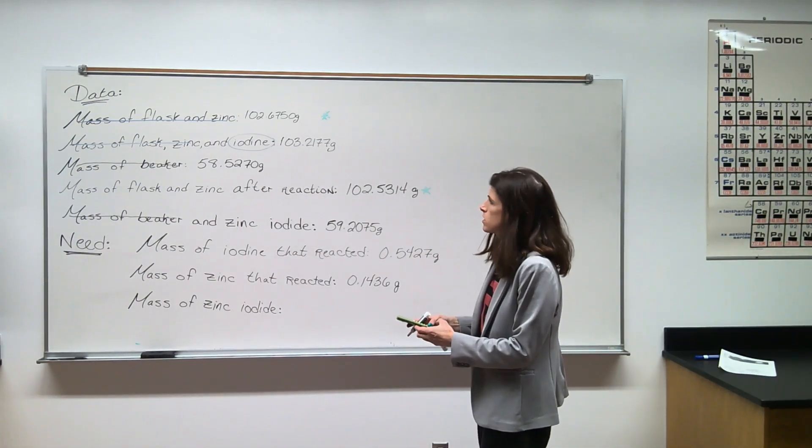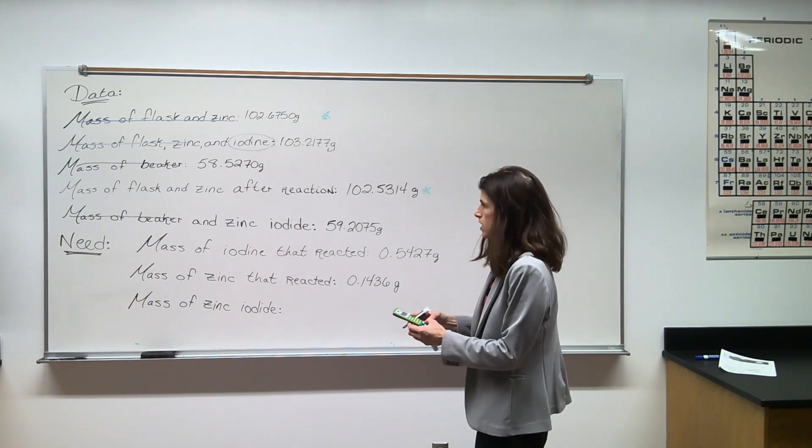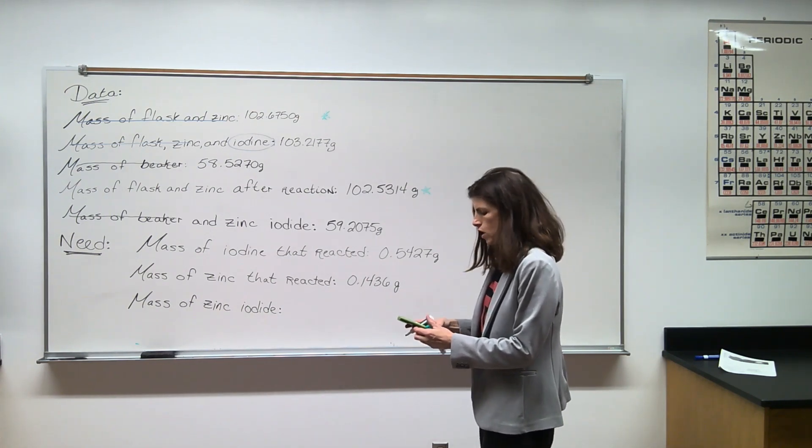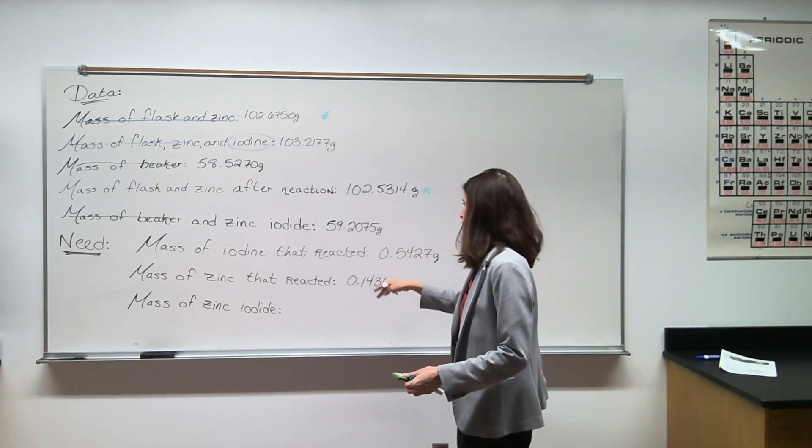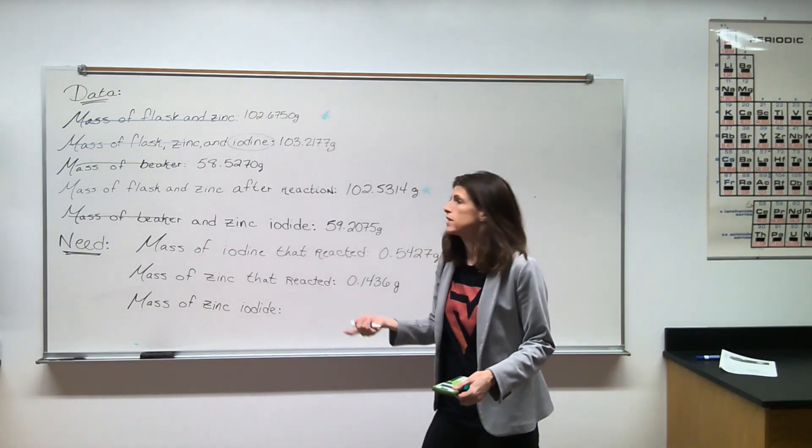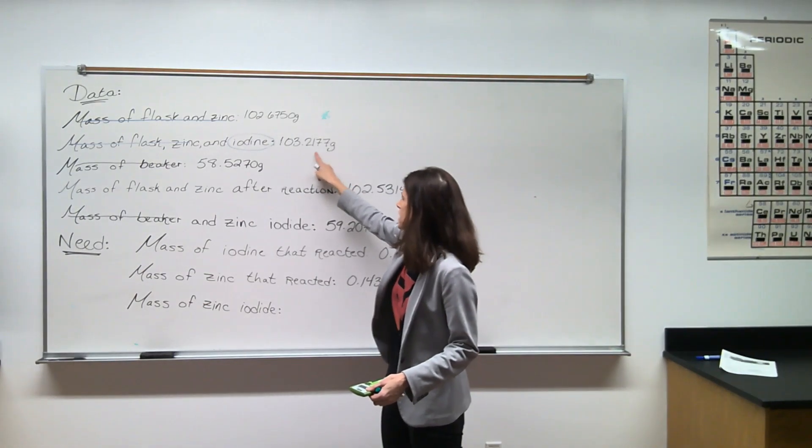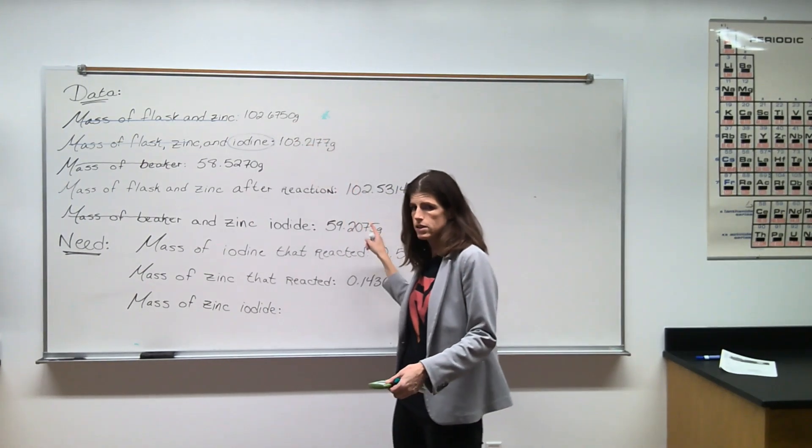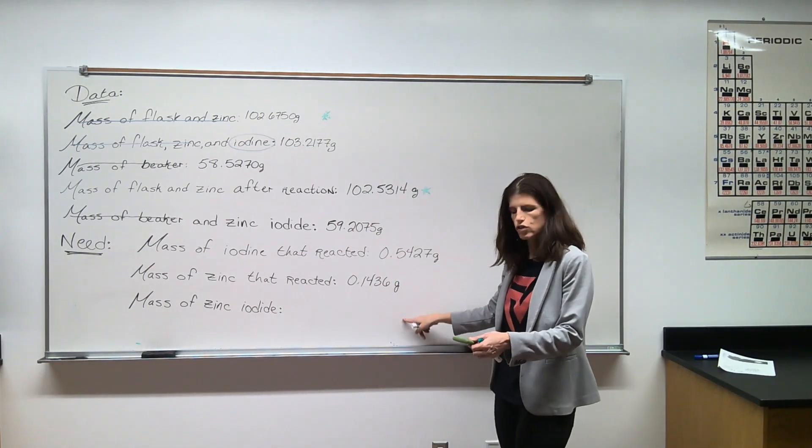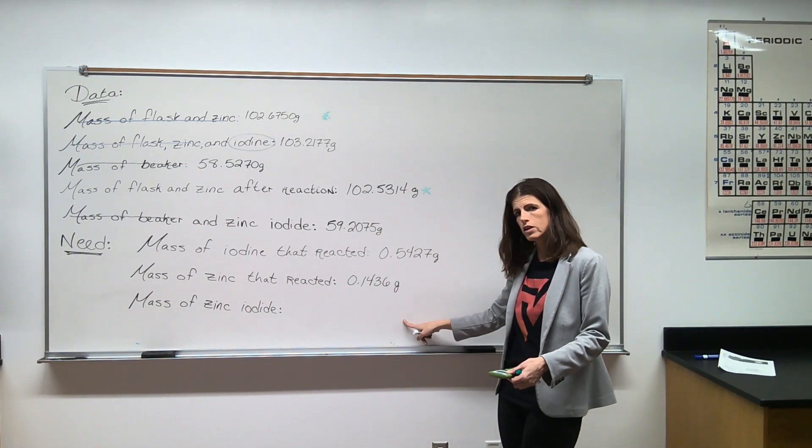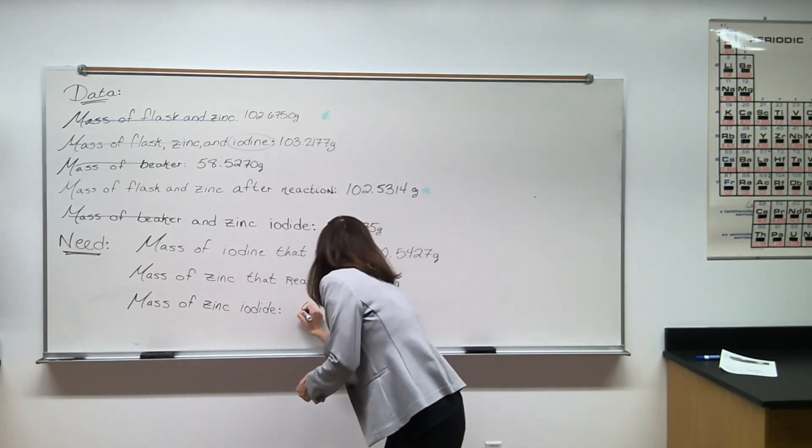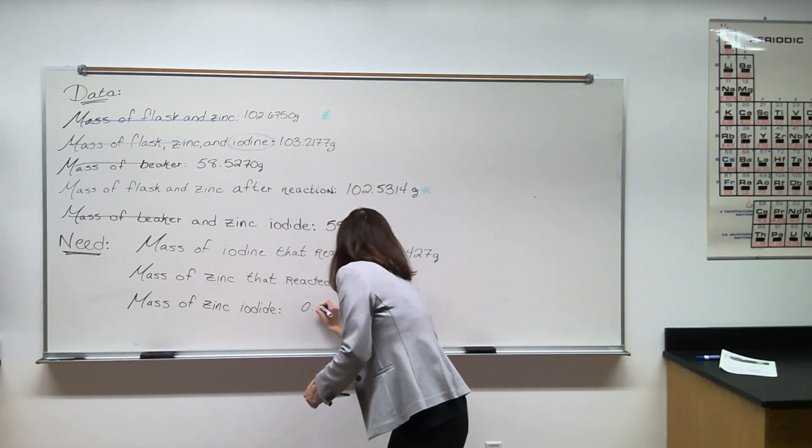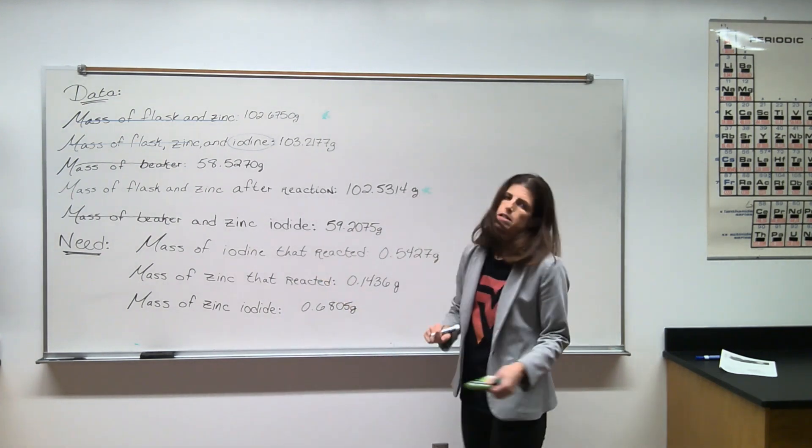The other thing to notice here as I'm doing this calculation is that I'm trying to maintain the same number of decimal places throughout. That's because of the law of sig figs when we're adding and subtracting. We have four decimal places with all of our masses. So even if I happen to get a zero in one of these values down here, I still need to maintain four decimal places. So I'm getting 0.6805 grams for the mass of my zinc iodide.